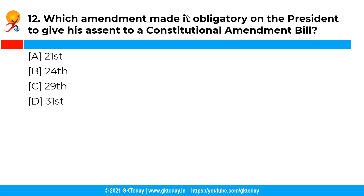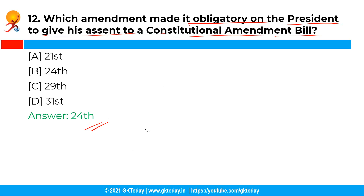The next question is: which amendment made it obligatory on the president to give his assent to a constitutional amendment bill? The correct answer is option B — the 24th Amendment. The 24th Constitutional Amendment Act of 1971 made it obligatory for the president to give his assent to a constitutional amendment bill, and he can neither withhold the assent nor return the bill for reconsideration.